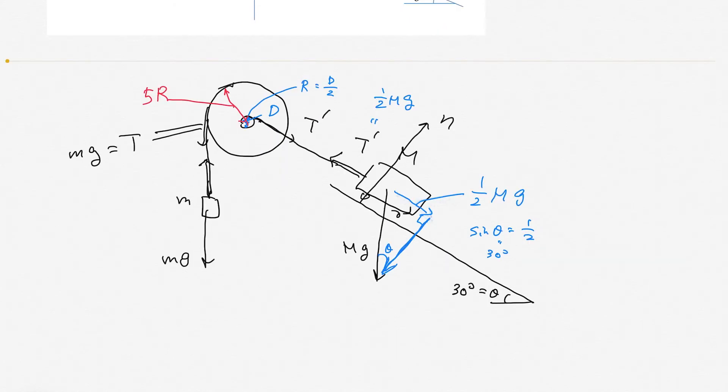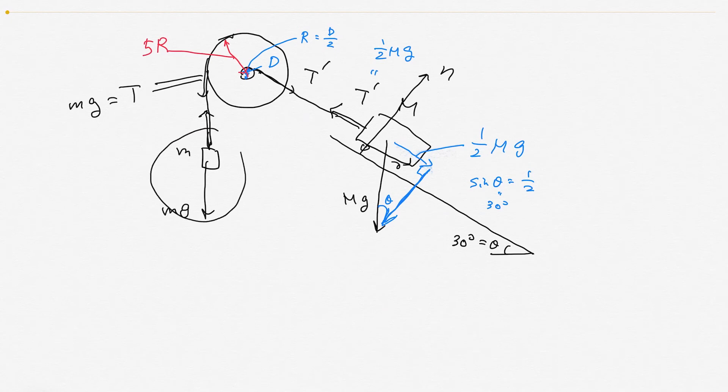For this part, it's 5R times T equals R times T'. And T equals mg, T' equals 1/2 Mg.